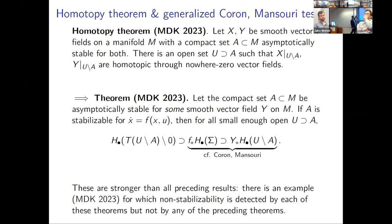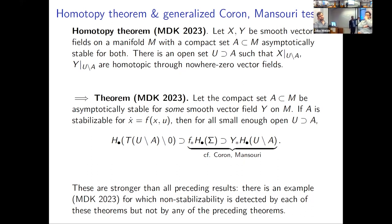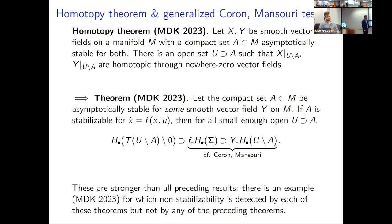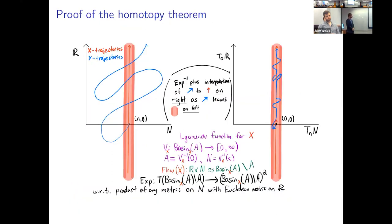Since X and Y are homotopic without going through zero, they induce the same map on homology between appropriate spaces. Considering a hypothetical closed-loop vector field of a control system, you can directly get a result that generalizes Coron and Mansuri's results and is also stronger — it can say things about certain examples those results cannot, and can handle sometimes the zero-Euler-characteristic case. Let me say something about the proof by picture.